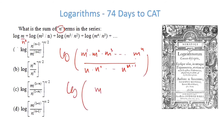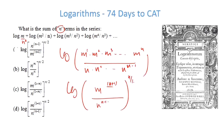Doing the summation: the exponent of m is 1+2+3+...+n = n(n+1)/2, and the exponent of n is 1+2+...+(n−1) = n(n−1)/2. Taking n/2 as a common factor in the power gives m^(n+1) and n^(n−1). The answer is option D.